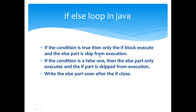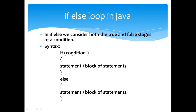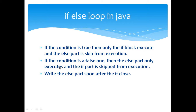If the condition is true, then only the if block executes and the else part is skipped from execution. Otherwise, if the condition is false — that means the boolean condition retrieves a false — then the block of statements corresponding to the if is skipped from execution and the else part will execute. At that time only one — if or else — is executed.